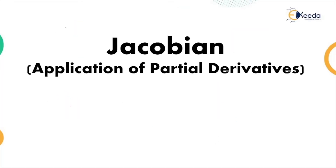When u and v are functions of x and y, you have to take their continuous partial derivatives — that is the Jacobian of u, v with respect to x, y. This is applicable when a product of two functions is given and we have to solve them; it can also be solved using the chain rule.